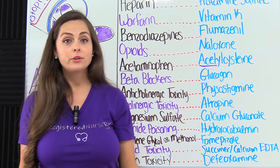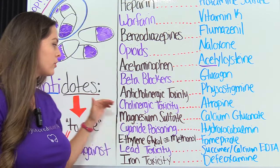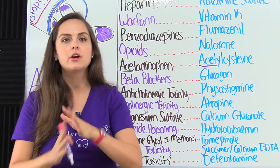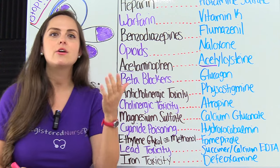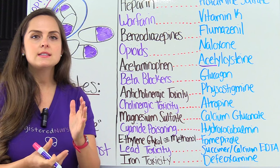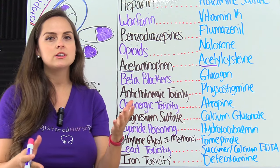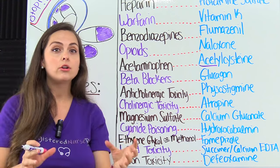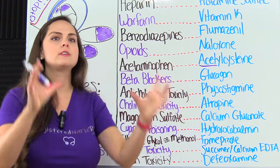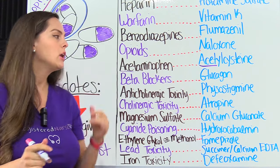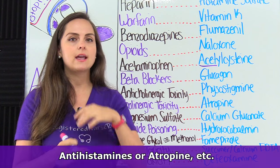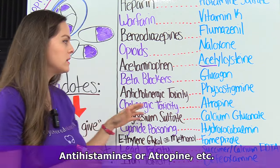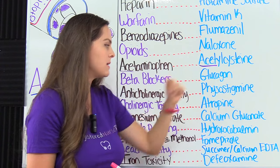Then we have anticholinergic toxicity along with cholinergic toxicity — these two conditions are opposite of each other. First, anticholinergic: this can be caused by various medications that affect those receptor sites and cause anticholinergic effects, such as antihistamines or atropine. If there's too much occurring in the body, we can give what's called physostigmine.